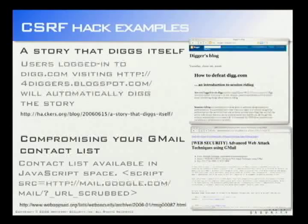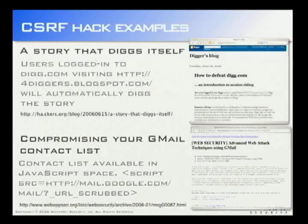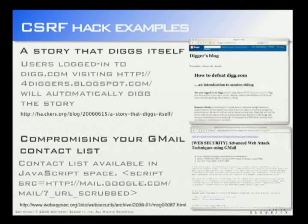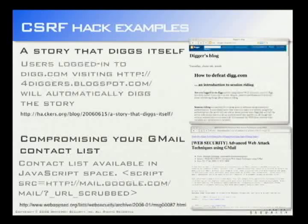Cross-site request forgery works for just about every web application or device attached to a network. On MySpace, a link could delete all your friends. On Yahoo Mail, a link could forward all your email. On your web bank, a forged request could wire all your money. The website trusts you, so it complies. We don't have hard statistics on prevalence because every website does it — websites don't look for that, they just trust it.